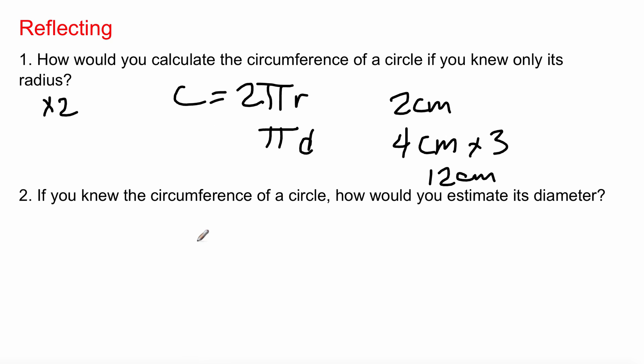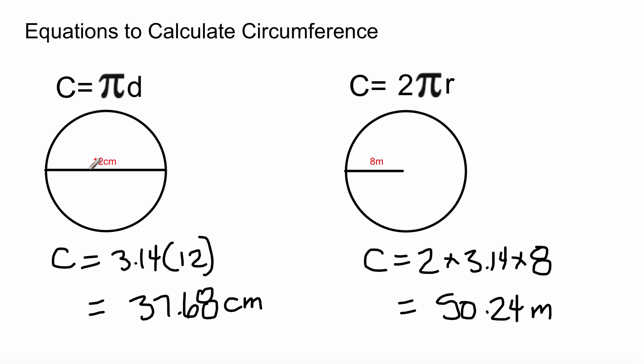Now, if you knew the circumference of a circle, how would you estimate its diameter? Well, that's a tricky one, isn't it? Not really. If you knew the circumference, let's just say the circumference is, as we used our previous example, let's just say the circumference is 37.68. Well what's our relationship? That's the diameter. The diameter is multiplied by 3.14 to get to this. Well if you're using multiplication, you're going to divide this by 3.14 and you're going to get the diameter of 12.